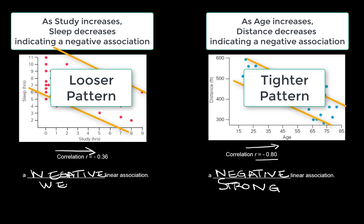The pattern is looser compared to age and distance to read a highway sign. The correlation coefficient is not as close to the absolute value of 1, indicating a weaker relationship. We're noticing this in both the looser pattern and the correlation coefficient.